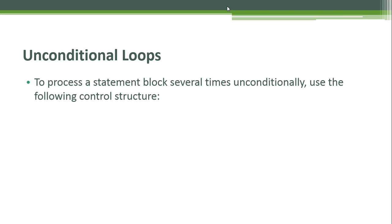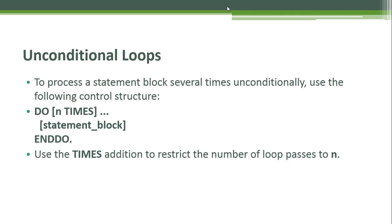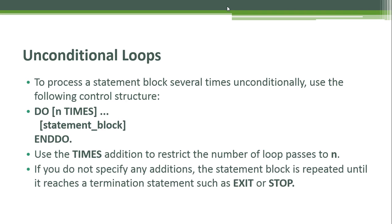For unconditional loops, to process a statement block several times unconditionally, use the following control structure: write DO, then how many TIMES, specifying the number of times, then your statement block, and end with END DO. Use the TIMES addition to restrict the number of loop passes to N. If you do not specify any additions, the statement block is repeated until it reaches a termination statement such as EXIT or STOP.